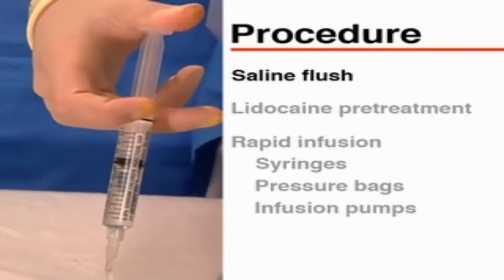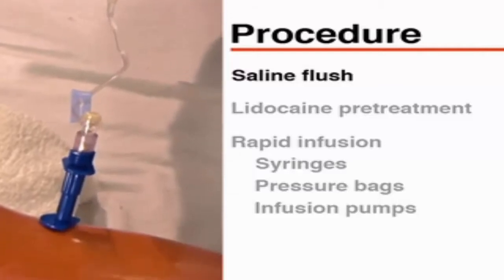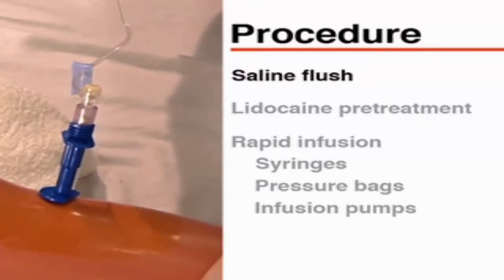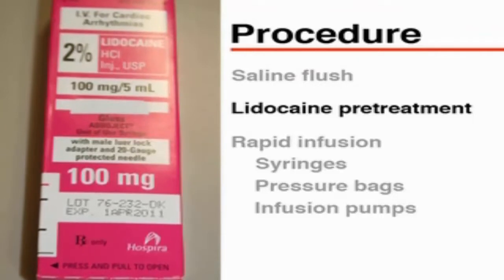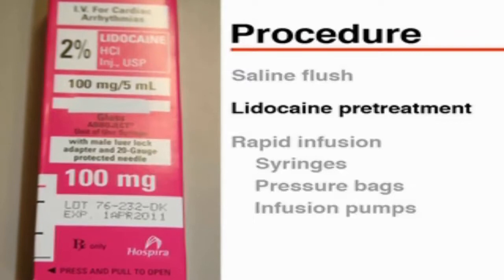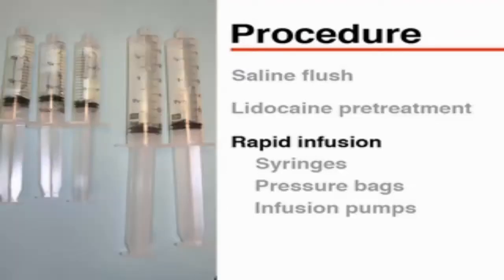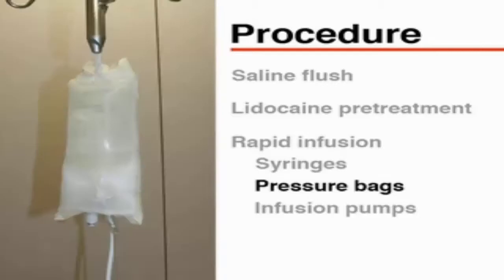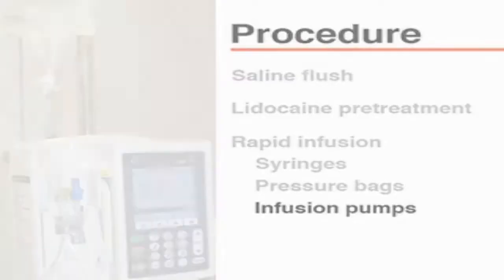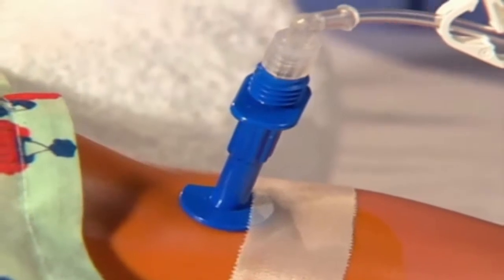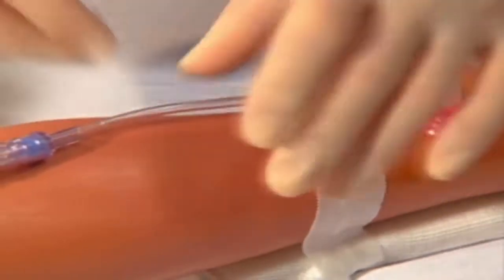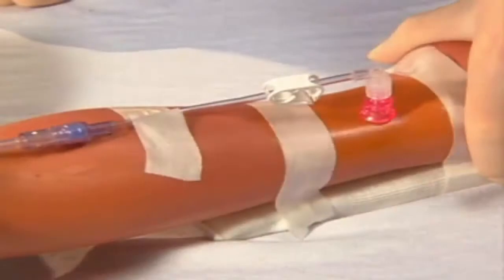A 10 cc saline flush is recommended initially to open venous sinusoids as well as after the infusion of any medications. In conscious children, pretreatment with lidocaine at a dose of 0.5 mg per kg through the intraosseous catheter can be effective in preventing visceral pain from increased intramedullary pressure. When a rapid infusion rate is crucial, a bolus infused manually with syringes is the most efficient way to quickly deliver a considerable volume of fluid. Pressure bags and infusion pumps may also be used. You may place tape or sterile gauze around the insertion site; however, avoid dressings that will prevent you from monitoring for infiltration, infection, or limb swelling.